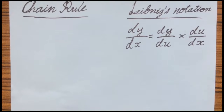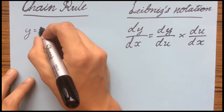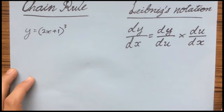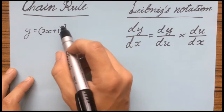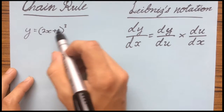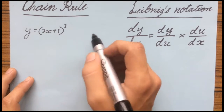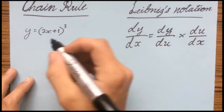Basic Derivatives: Chain Rule, Leibniz Notation. The chain rule is basically, you have a function — let's say 2x plus 1 to the power of 3. The Leibniz version is basically: you derive the outside, leave the inside the same, and multiply by the derivative of the inside. So it's the derivative of the outside multiplied by the derivative of the inside, and I'll show you with this example.